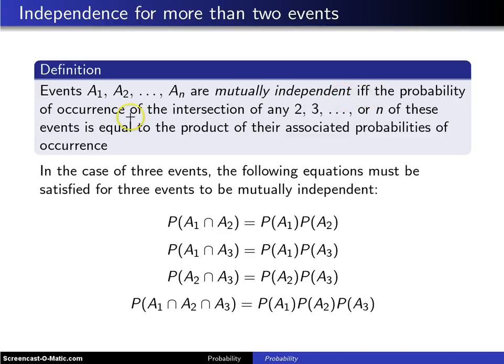So these events are mutually independent if and only if the probability of occurrence of the intersection of any two, three, four, dot dot dot, n of these events is equal to the product of their associated probabilities of occurrence.